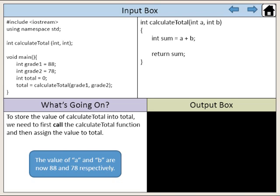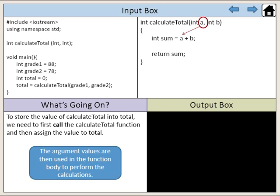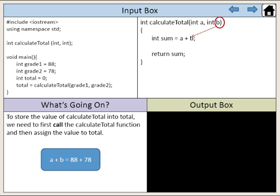The value of a and b are now 88 and 78 respectively. The argument values are then used in the function body to perform the calculations. The value of a is 88. The value of b is 78. So the value of sum is 166.